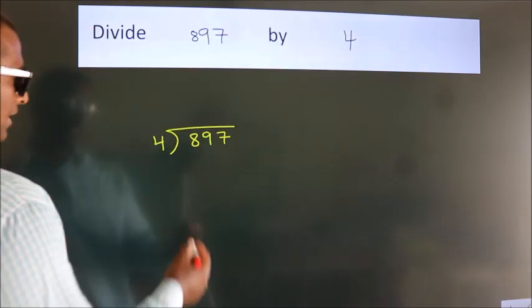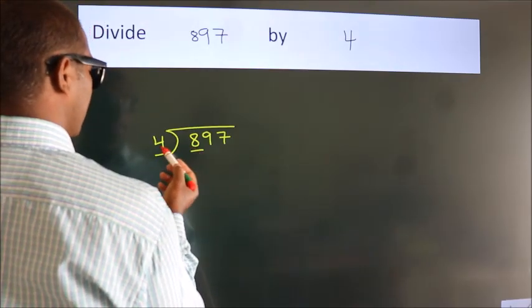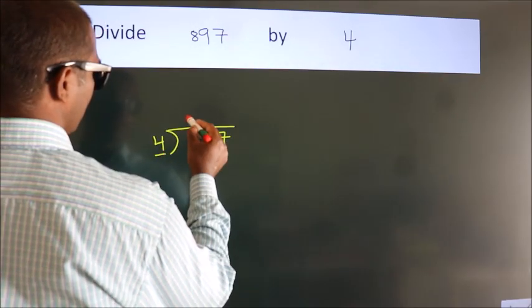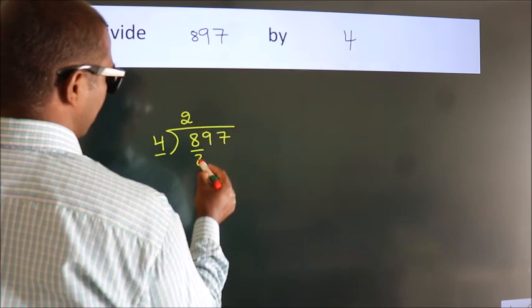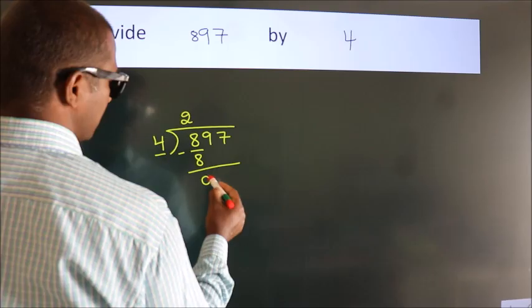Next, here we have 8 and here 4. When do we get 8? In the 4 table: 4 times 2 is 8. Now we should subtract. We get 0.